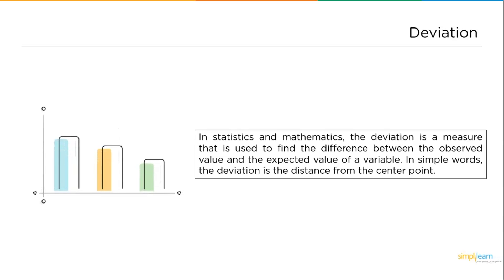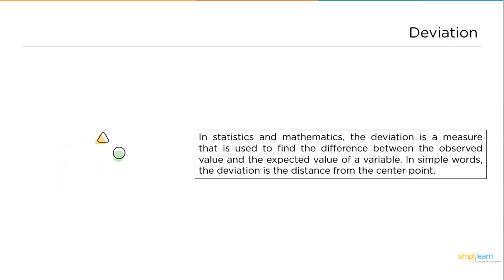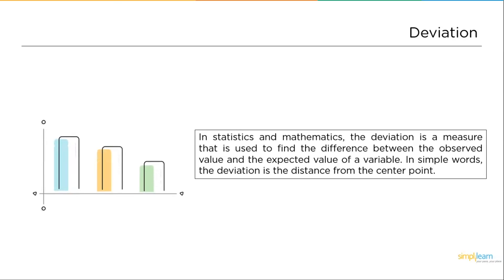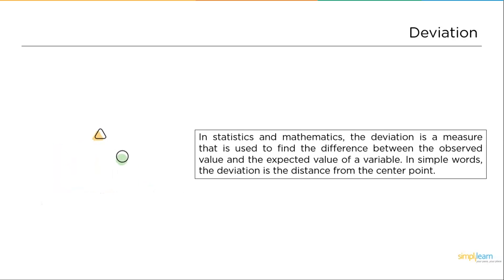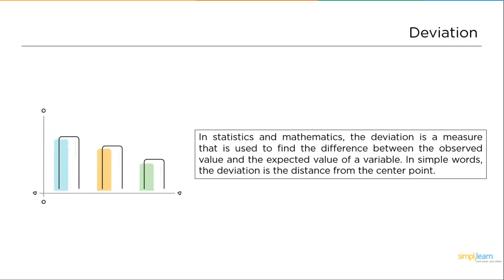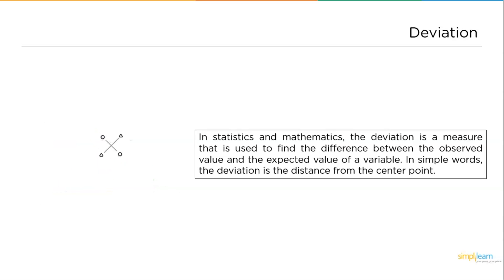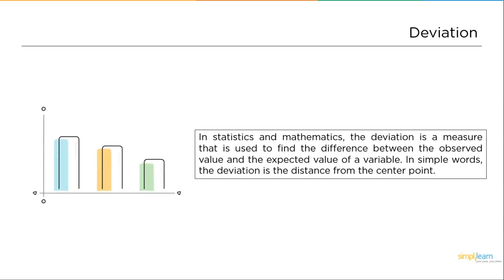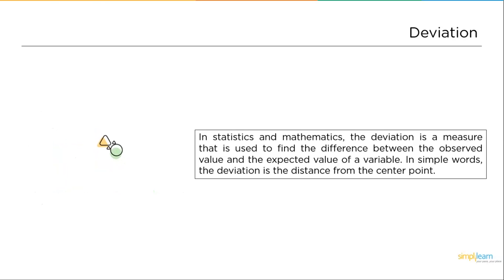Before getting deep into it, let's understand what deviation is. Deviation is a measure used to find the difference between the observed value and the expected value. In simple terms, deviation is the distance from the center point. For example, when you are looking at a graph, you will be expecting some value, and if you get a difference that is above or below the expected point, that is called the deviation.